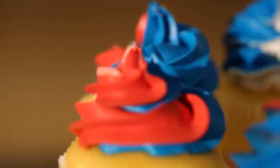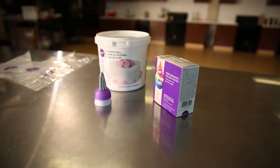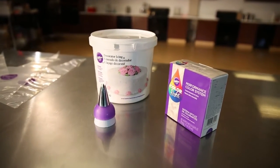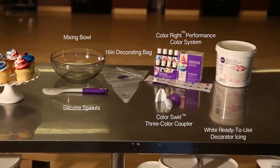Looking for an easy and fun way to bring a little pop of color into your 4th of July cupcakes? Wilton's Color Swirl 3-Color Coupler makes it easy to incorporate red, white, and blue on one cupcake or any other sweet treat.